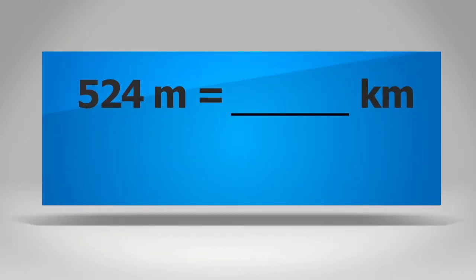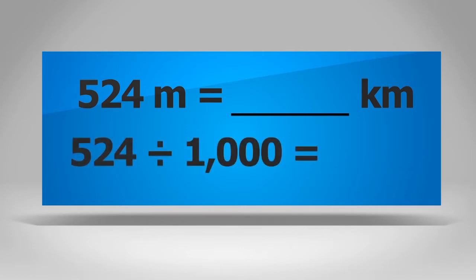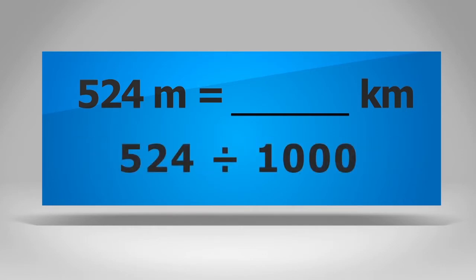Convert 524 meters to kilometers. 1,000 meters equals 1 kilometer. So divide 524 by 1,000 to get 524 thousandths. To divide 524 by 1,000, place a decimal point at the end of 524. Then move the decimal point three places to the left. 524 meters equals 0.524 kilometers.